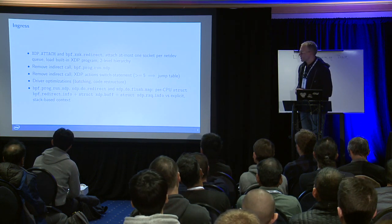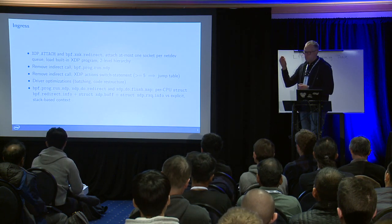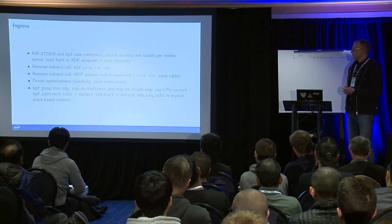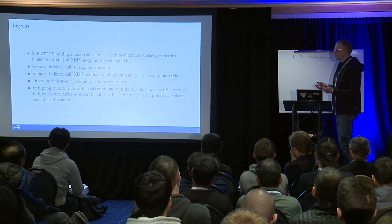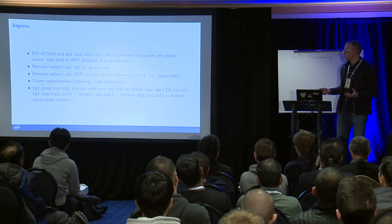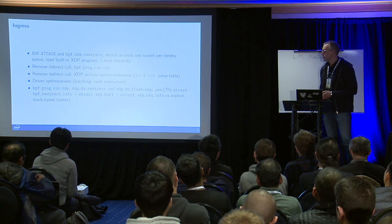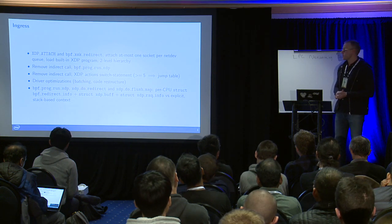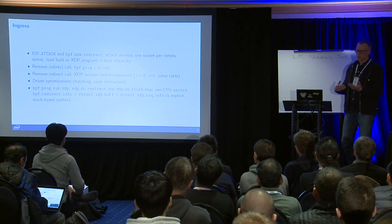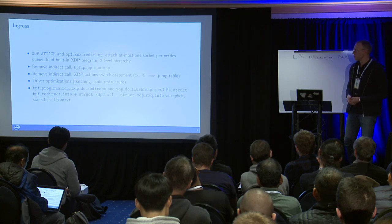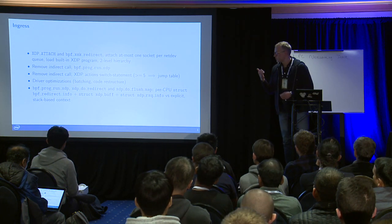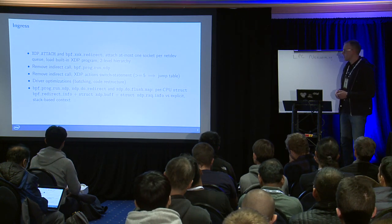This ties into the second optimization: we take this minimal program that most users want and make it a built-in XDP program. Think of it as a two-level hierarchy — external or regular XDP programs have priority over the built-in one. If an AF-XDP user attaches a socket to a queue, it loads the built-in XDP program, given there's no external program running. If the built-in program is running and you load an external one, the external one takes priority. The nice thing is that with a known-behavior XDP program, we can actually remove one indirect call in the BPF program, which gives a good performance benefit.